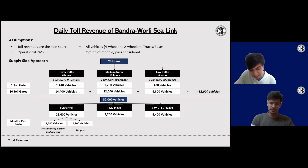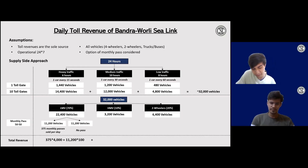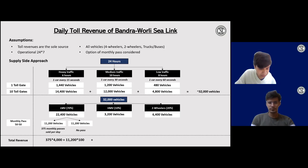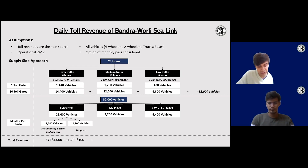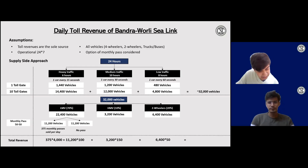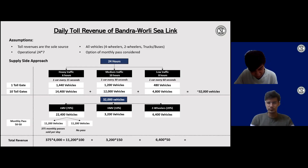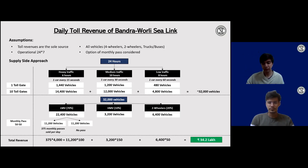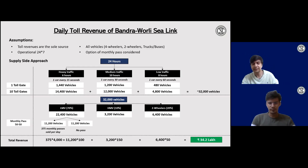Moving on to HMVs — we have 3,200 HMVs with an average fare of approximately 150 rupees, giving us the HMV revenue. Then the two-wheelers: 6,400 in number at an average fare of 50 rupees per two-wheeler. Summing up the three categories of revenues gives us the daily toll revenue for the Bandra Worli Sealink. The final figure comes out to approximately 34.2 lakh rupees as the daily toll revenue. Does this sound like a fair number? Yeah, the number looks good.